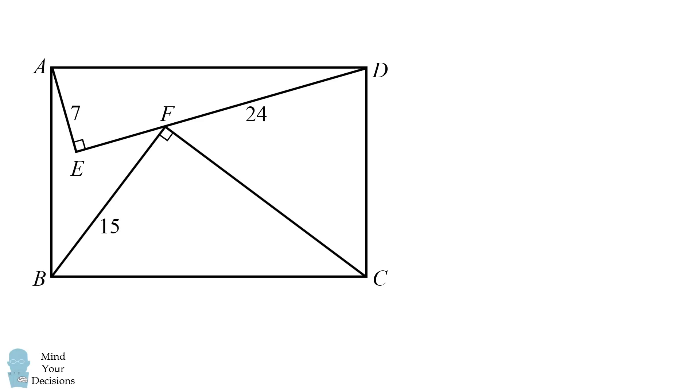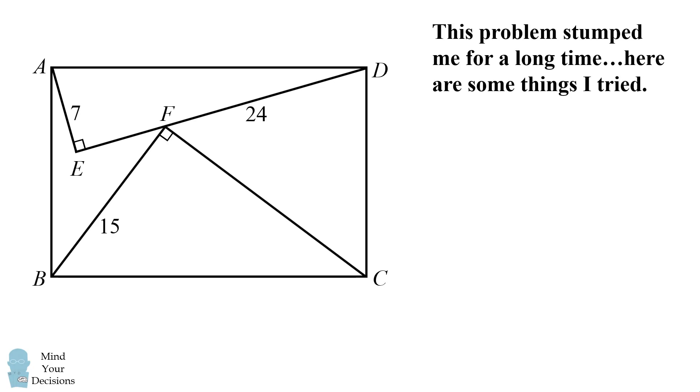Before I go over a solution, I want to admit that this problem stumped me for a long time. Here are some of the things I tried before I could figure it out. I first considered the altitude lengths of these triangles. While I could figure out the lengths of these altitudes, I then saw that there would be overlap between the altitudes, so that would not lead to the length of AB.